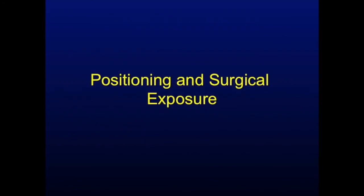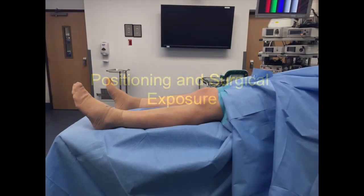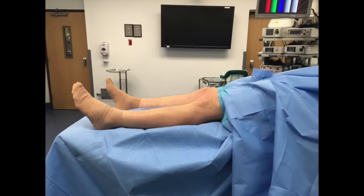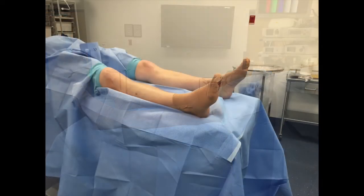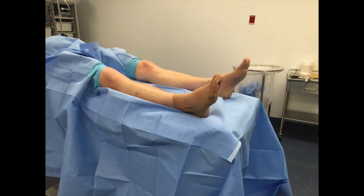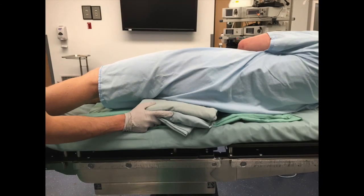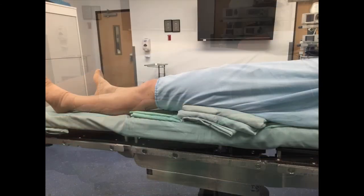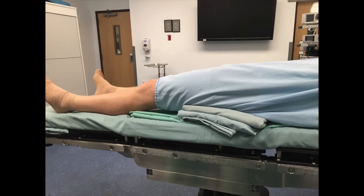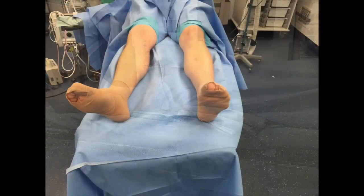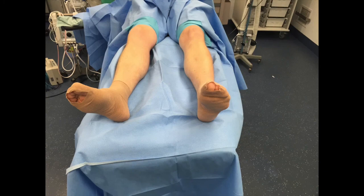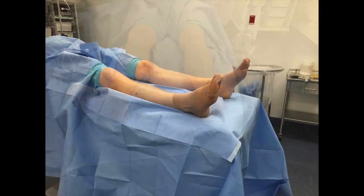The patient is positioned supine on a standard operating room table. After a thigh tourniquet is placed, the operative extremity is prepped and draped. A bump or roll of towels can be placed under the hip of the operative extremity, if a unilateral surgery is being performed, to internally rotate the leg, thereby facilitating viewing by the surgeon. A bilateral lower extremity drape is useful if performing bilateral fasciotomies.